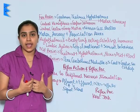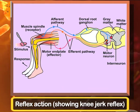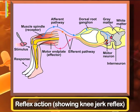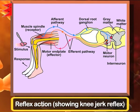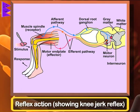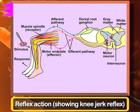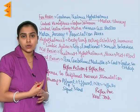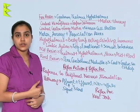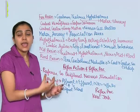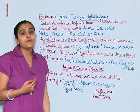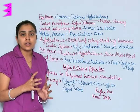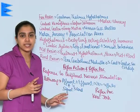In this diagram, the knee jerk reflex arc is shown. You can see how the efferent pathways are working, how conduction is happening, how it goes to the grey matter of the spinal cord, and how this jerk takes place. This pathway consists of one afferent neuron and one efferent neuron. The afferent neuron carries the signal to the spinal cord, and the efferent neuron carries the signal from the CNS to the effector region, forming a reflex arc as shown in the diagram.